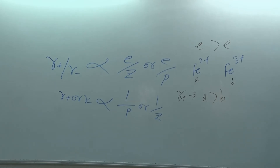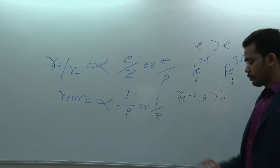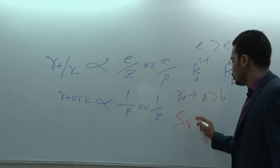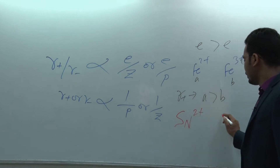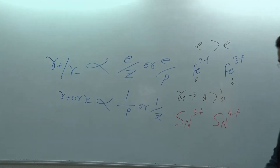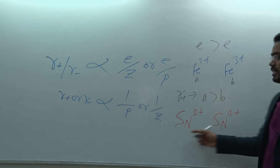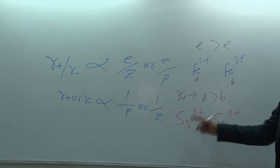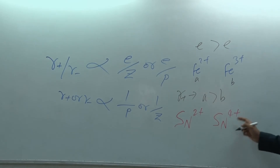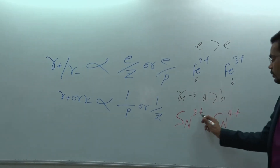What is the order of radius for Sn²⁺ and Sn⁴⁺? Both have the same number of protons, and Sn²⁺ has a higher electron count compared to Sn⁴⁺, therefore the order of radius is Sn²⁺ greater than Sn⁴⁺.